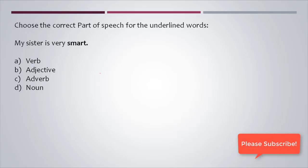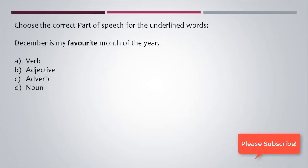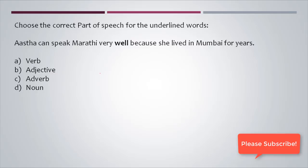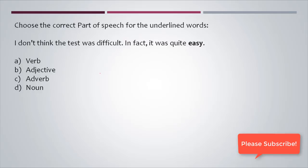'My sister is very smart' — 'smart' describes the noun 'sister', so it is an adjective. 'December is my favorite month of the year' — 'favorite' is representing the quality of the month, so it should be an adjective. 'Astha can speak Marathi very well because she lived in Mumbai for years' — 'well' describes how the action is performed, so it is an adverb. 'I don't think the test was difficult, in fact it was quite easy' — 'easy' tells the quality of the noun/pronoun, so it is an adjective.